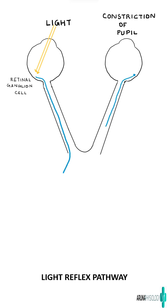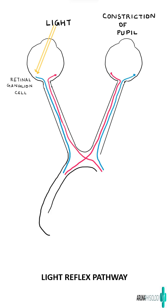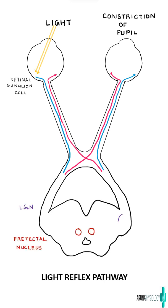We already know the optic pathway: the nasal fibers will cross at the optic chiasm and the temporal fibers will pass as such. Now the two important nuclei important for the light reflex pathway — the first is the pretectal nucleus.